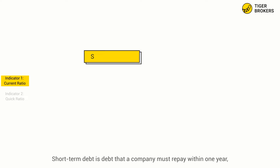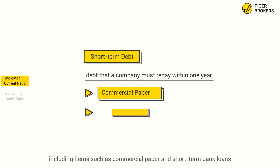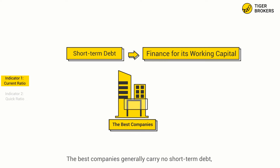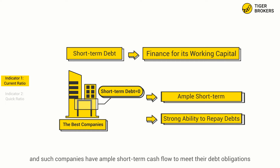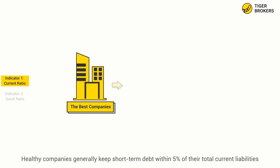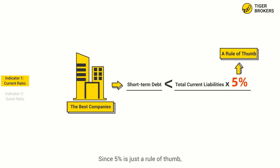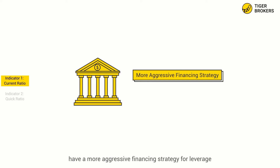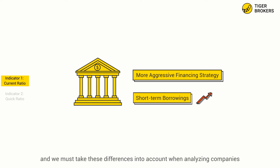3. Short-term Debt. Short-term debt is debt that a company must repay within one year, including items such as commercial paper and short-term bank loans. Companies use short-term debt to finance working capital. The best companies generally carry no short-term debt, and such companies have ample short-term cash flow to meet their debt obligations. Healthy companies generally keep short-term debt within 5% of their total current liabilities — though 5% is just a rule of thumb. We should note that certain sectors, such as the financial industry, have a more aggressive financing strategy for leverage. Therefore, companies in these industries tend to have relatively higher short-term borrowings, and we must take these differences into account when analyzing companies.